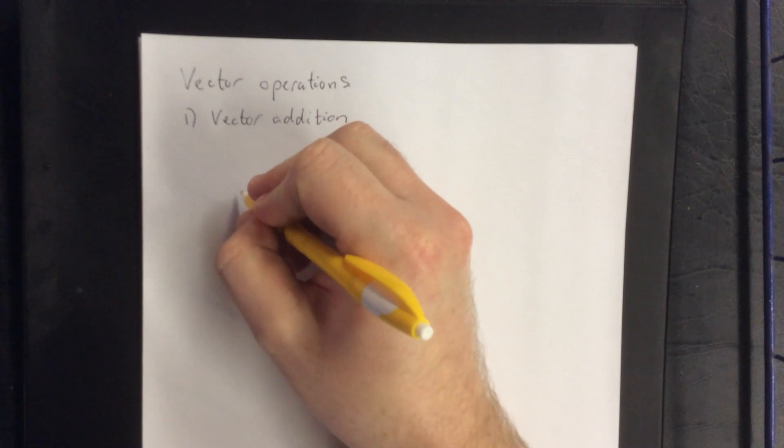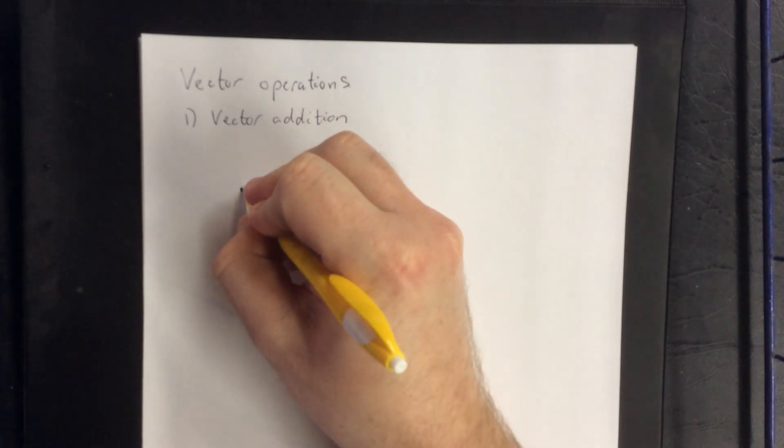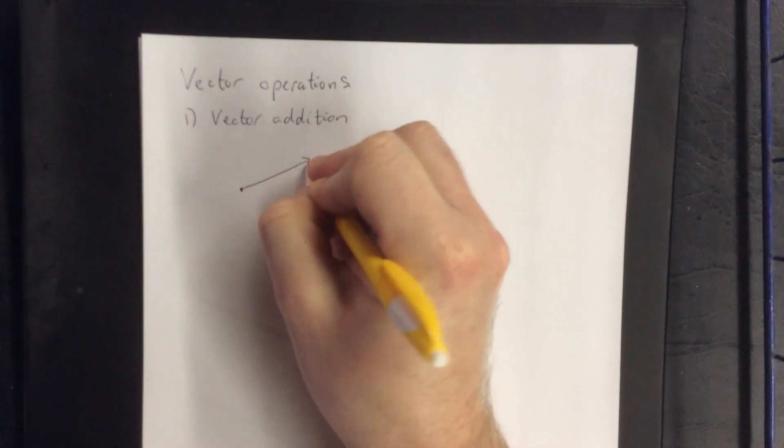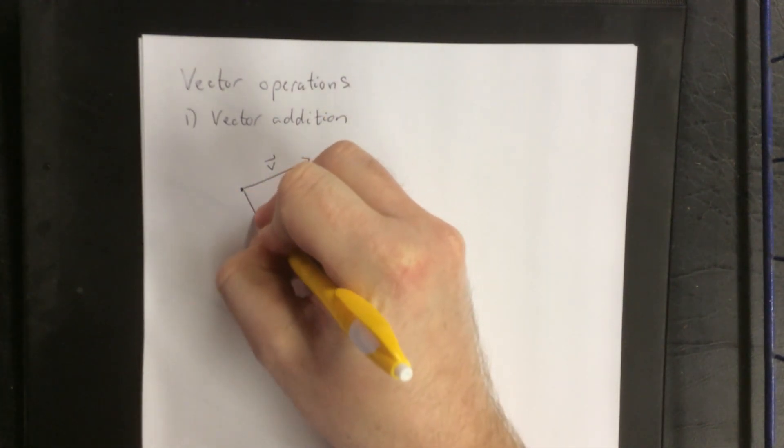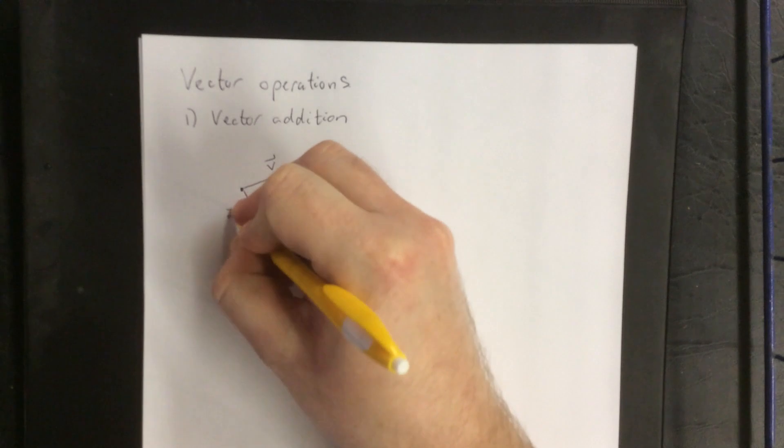So for example, let's say that we have one person that's pushing on an object in this direction, we'll call this one vector v, and we have another person pushing on an object in this direction with this much force, we'll call that w.